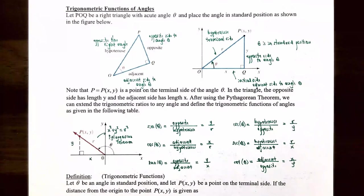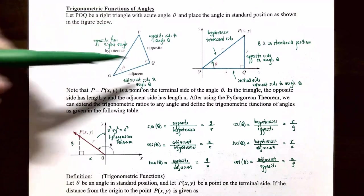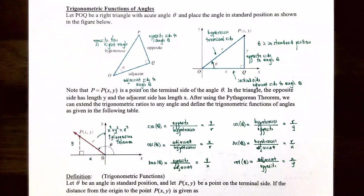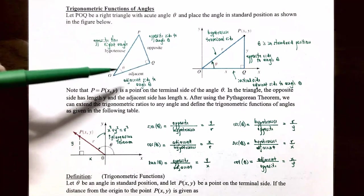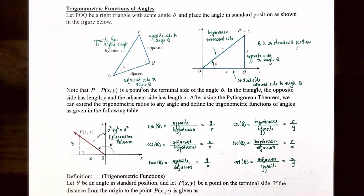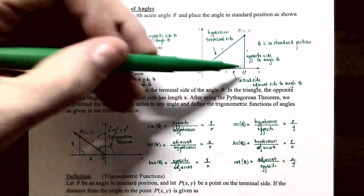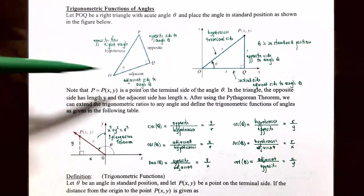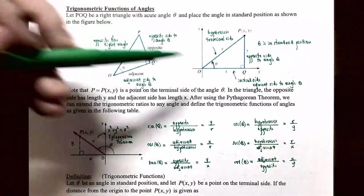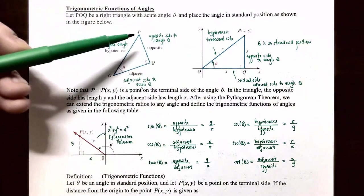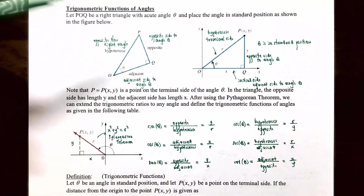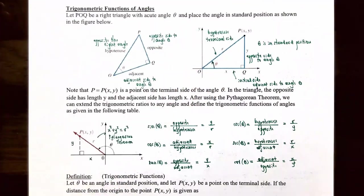Let POQ be a right triangle with an acute angle theta and place the angle in standard position as shown in the figure. You have triangle POQ with angle theta formed from vertex O. The opposite side and adjacent side to theta are labeled, and the hypotenuse is across from the right angle. When placed in standard position, OQ is the adjacent side along the x-axis, labeled distance x, PQ is the opposite side labeled distance y, and the hypotenuse is labeled distance r.